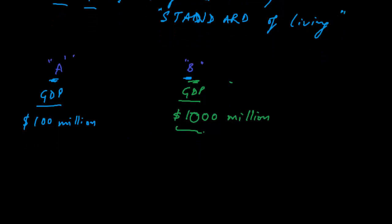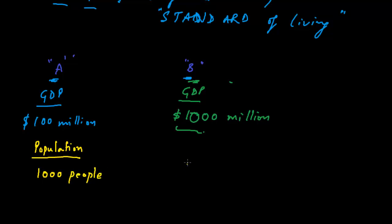Now let's also look at the populations. Country A has a population of one thousand people — pretty small, but just for the sake of calculation. And the population of country B is one lakh people.